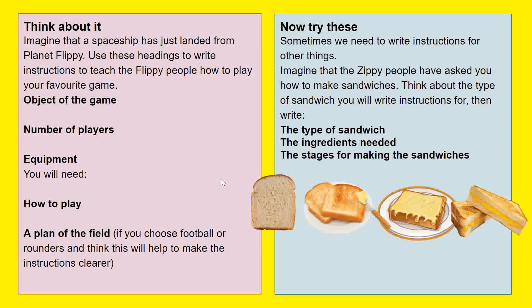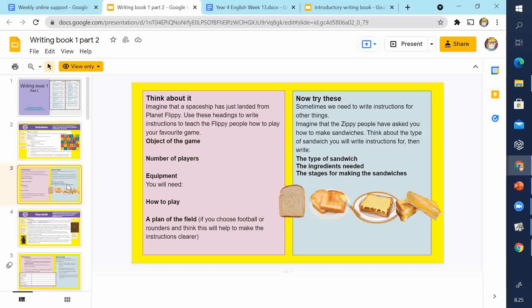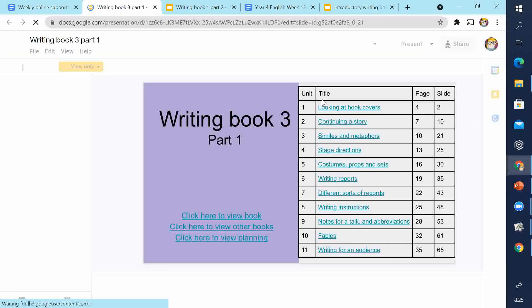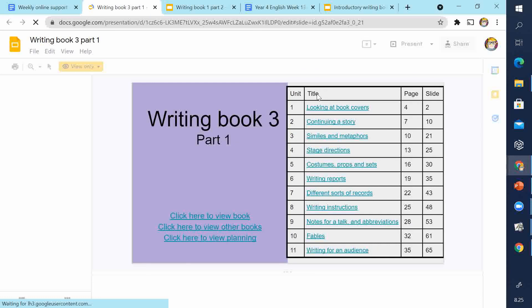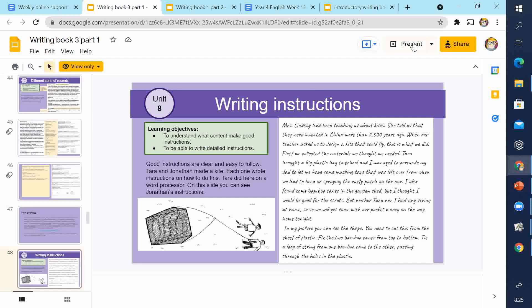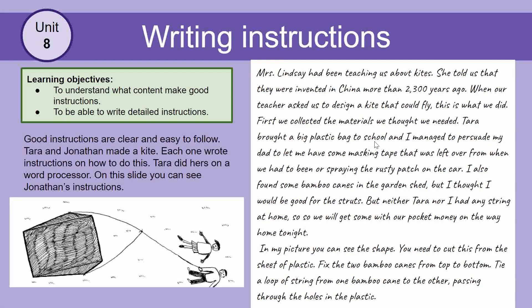You've already written instructions for making sandwiches, so you probably won't want to do that again. You can choose what to make instructions for. Now we're going to compare two sets of instructions and look at which is clearer. These are instructions for making a kite. Good instructions are clear and easy to follow. Tara and Jonathan each made a kite and wrote instructions on how to do it.